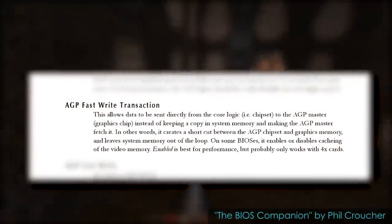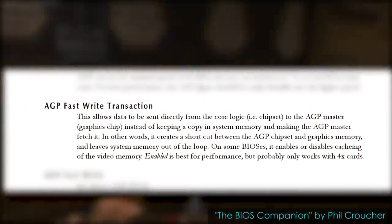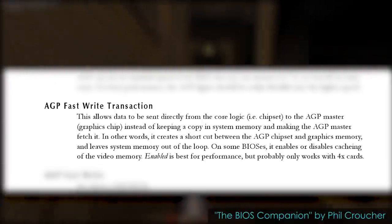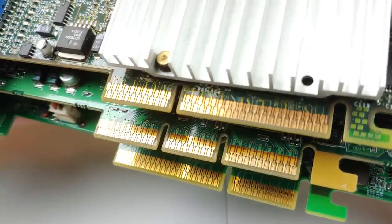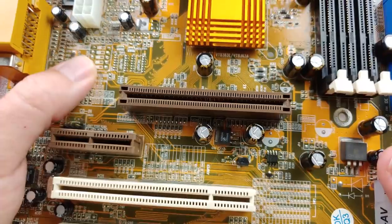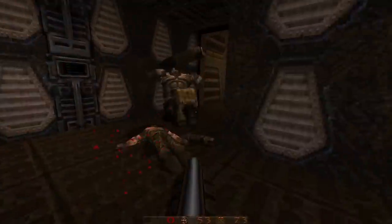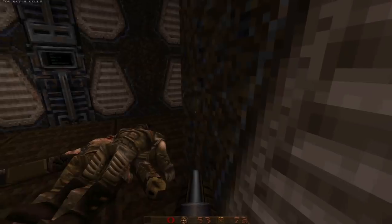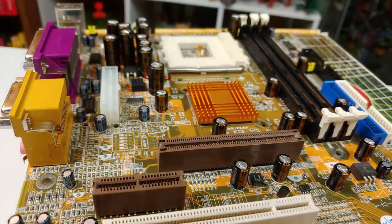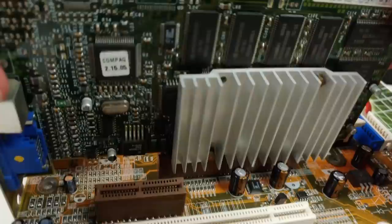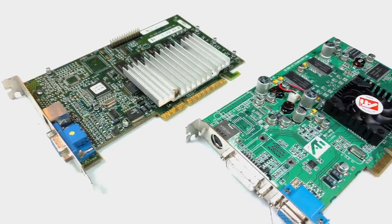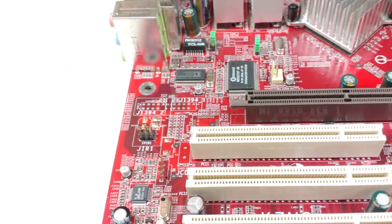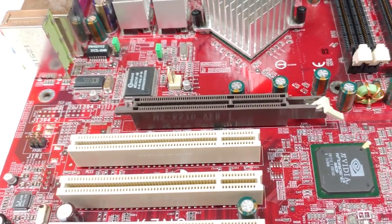Another improvement introduced with AGP 2.0 was fast writes, which allowed data to be written directly to the graphics card without having to be copied first to system memory. Many board manufacturers during the start of the millennium got around the slot key confusion with what's known as universal AGP, which was just an open slot with no keys that could accept either 3.3 volt or 1.5 volt cards interchangeably. This was handy for those that wanted to use 2X AGP exclusive cards, such as 3DFX's Voodoo line, but wanted to upgrade to 4X AGP cards later on. Universal AGP largely disappeared once 8X AGP took over.